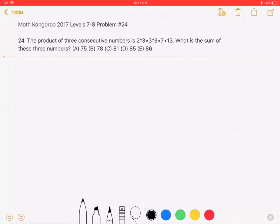The product of three consecutive numbers is 2³×3³×7×13. What is the sum of these three numbers?